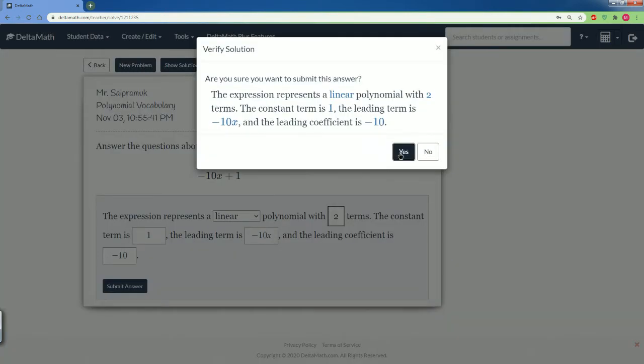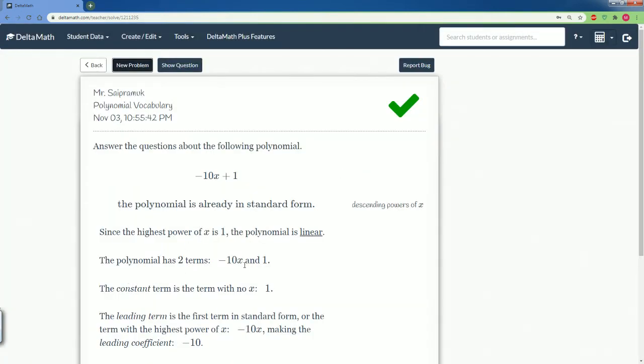Submit, and it says that's correct. The polynomial has two terms. Since the highest power of x is 1, the exponent here is 1, we call that linear. It's in standard form, decreasing in power.